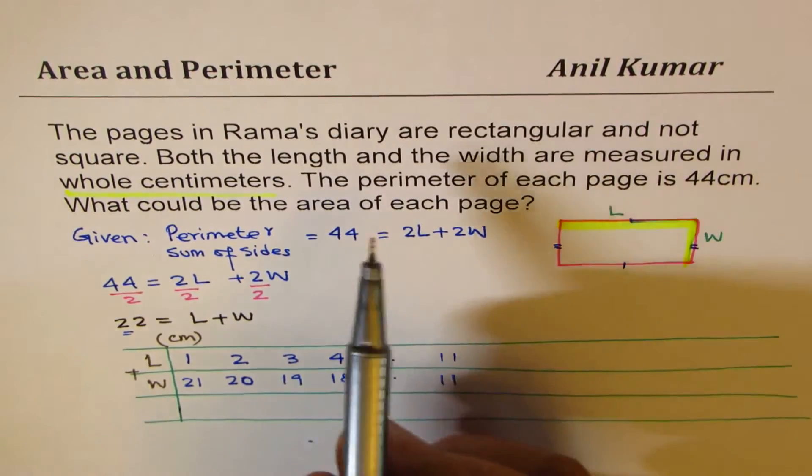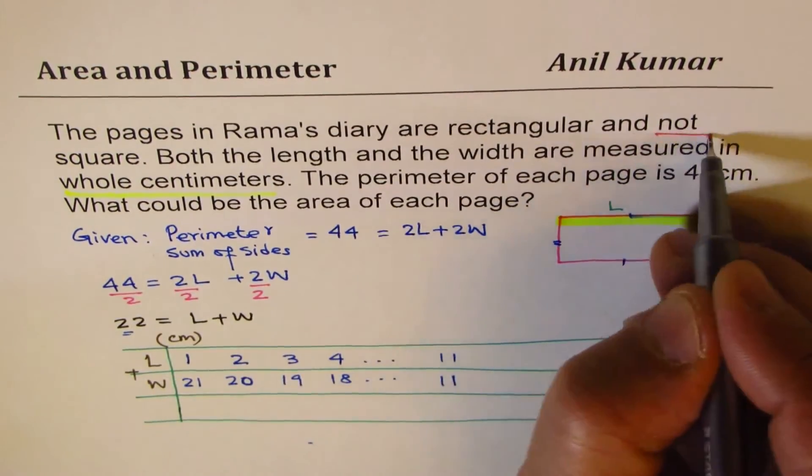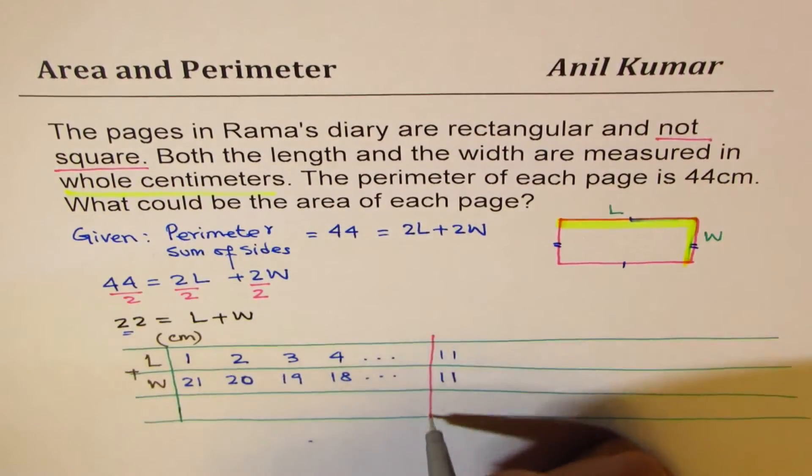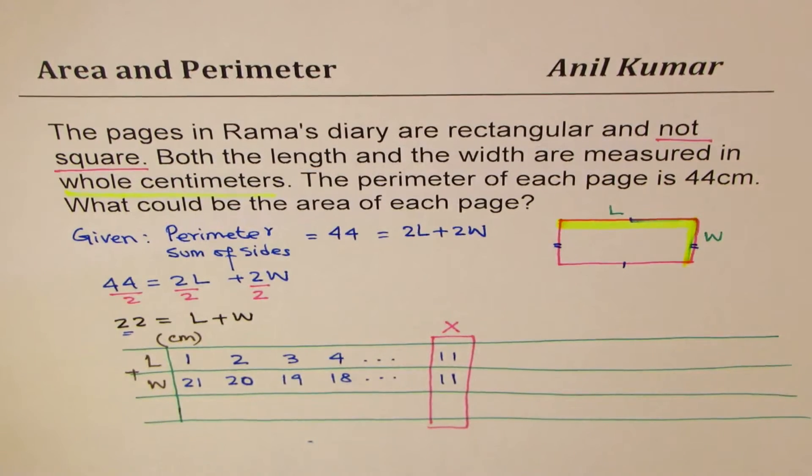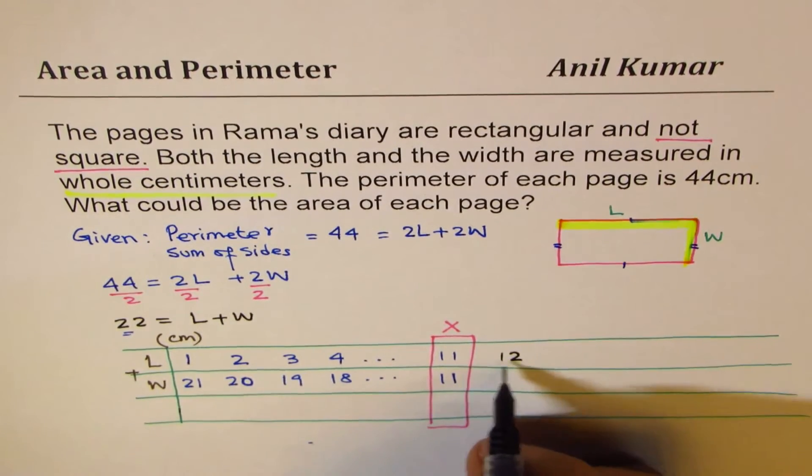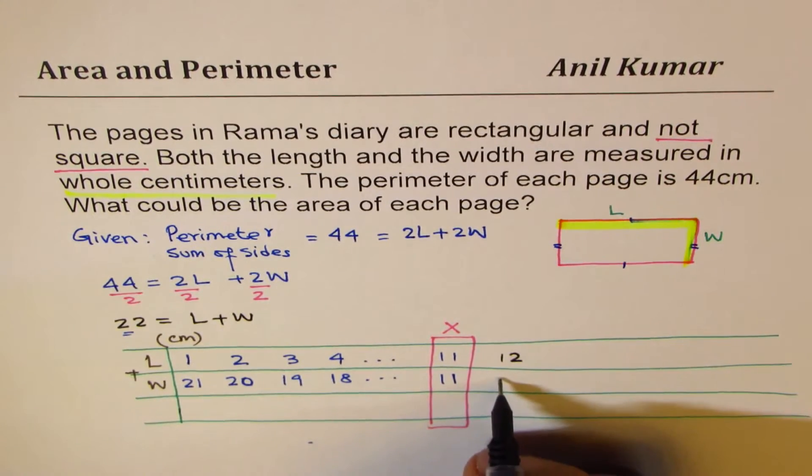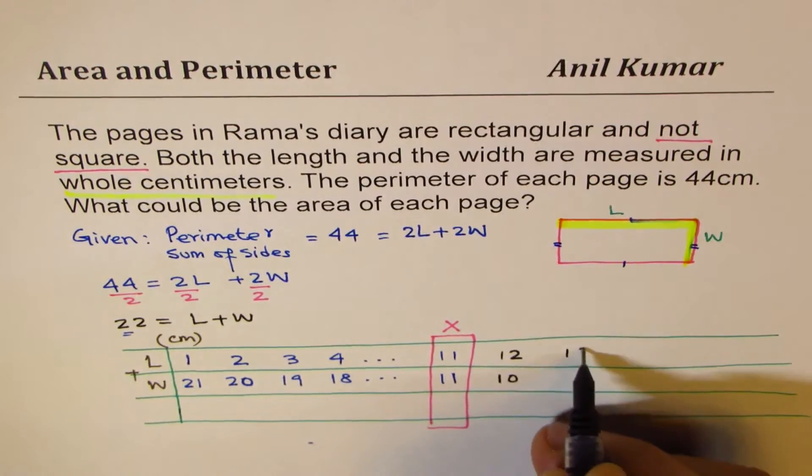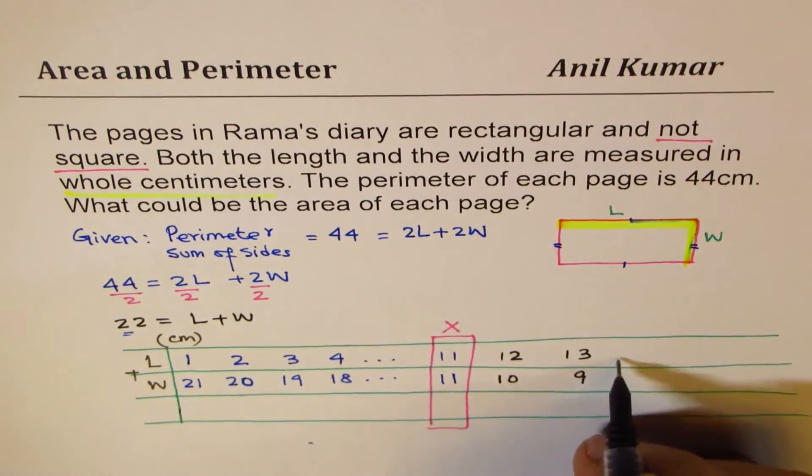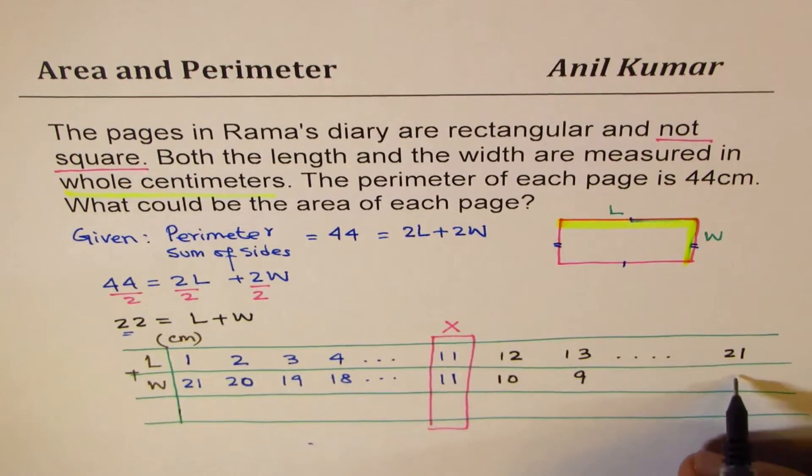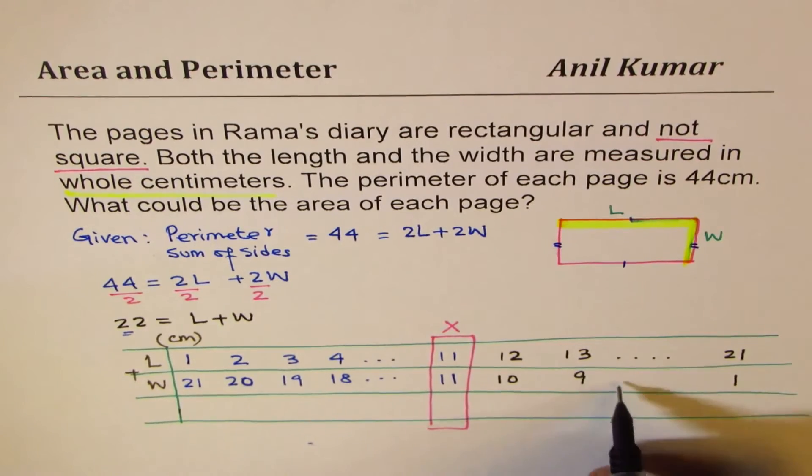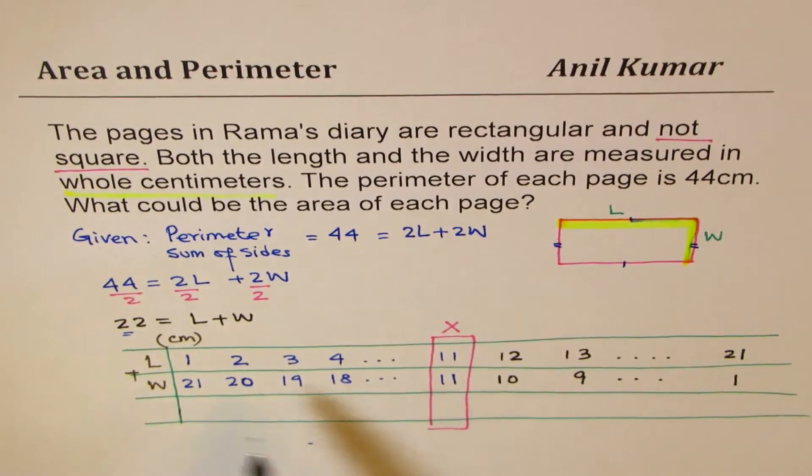Now the question says that not square. So this value we will not consider. Because we are saying not square. And then we can write this as 12 and 10, and 13 and 9, and so on. Till the end, we'll get 21 here and 1 here. That makes 22. So likewise, you can list all possible values.